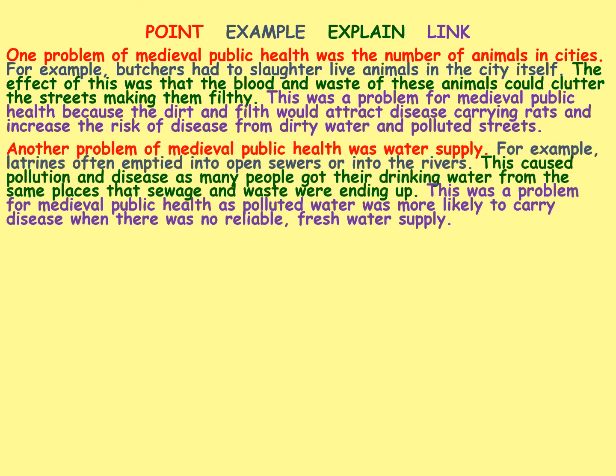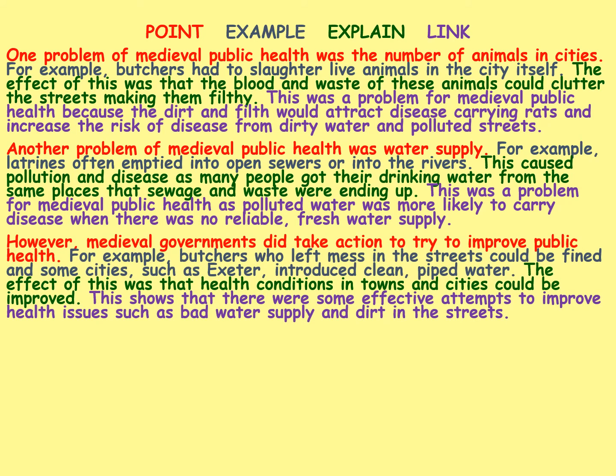Here's the next paragraph using water supply: 'Another problem of medieval public health was water supply. For example, latrines often emptied into open sewers or into the rivers. This caused pollution and disease as many people got their drinking water from the same places that sewage and waste were ending up. This was a problem for medieval public health as the polluted water was more likely to carry disease when there was no reliable or fresh water supply.' However, medieval governments did take action — bringing in my own knowledge — for example, butchers who left mess could be fined, and some cities such as Exeter introduced clean piped water. The effect was that health conditions in towns and cities could be improved.